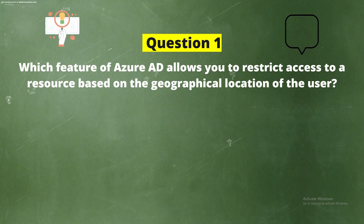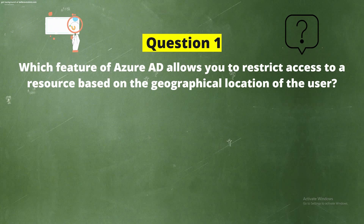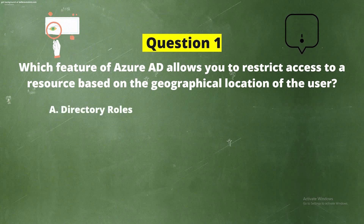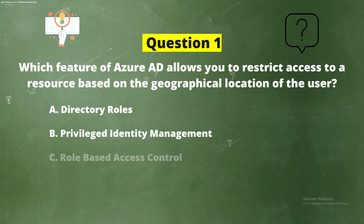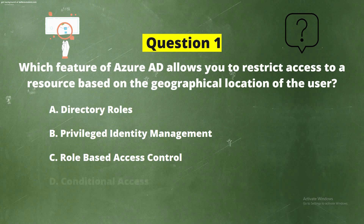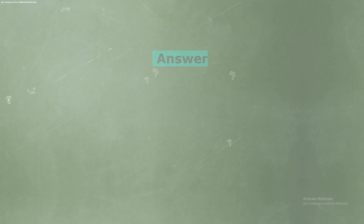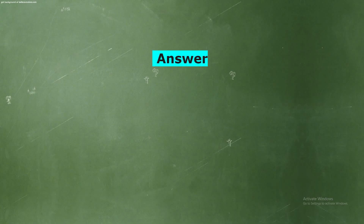Question 1: Which feature of Azure AD allows you to restrict access to a resource based on the geographical location of the user? The options are: Option A - Directory Roles, Option B - Privileged Identity Management, Option C - Role Based Access Control, Option D - Conditional Access.